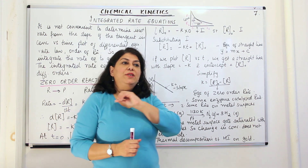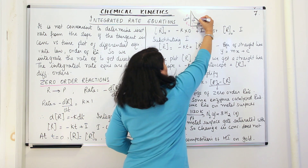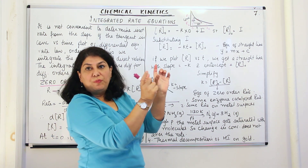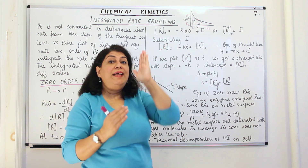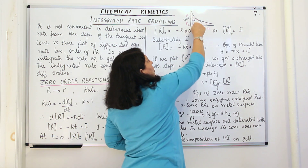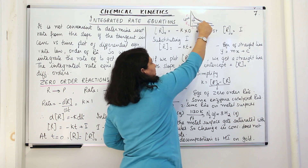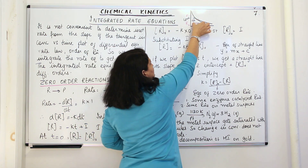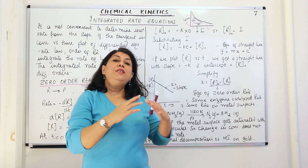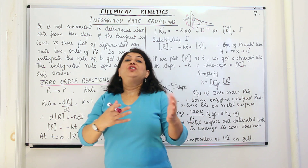That gives you the average rate of reaction. Then, for the instantaneous rate at a certain instant, we draw a tangent to the curve at the point of interest and extrapolate it equally on both sides. We draw perpendiculars parallel to the concentration and time axes, forming a right-angled triangle. The small difference in time and the small difference in concentration give us dr/dt — the instantaneous rate of reaction. This equation is known as the differential rate equation.